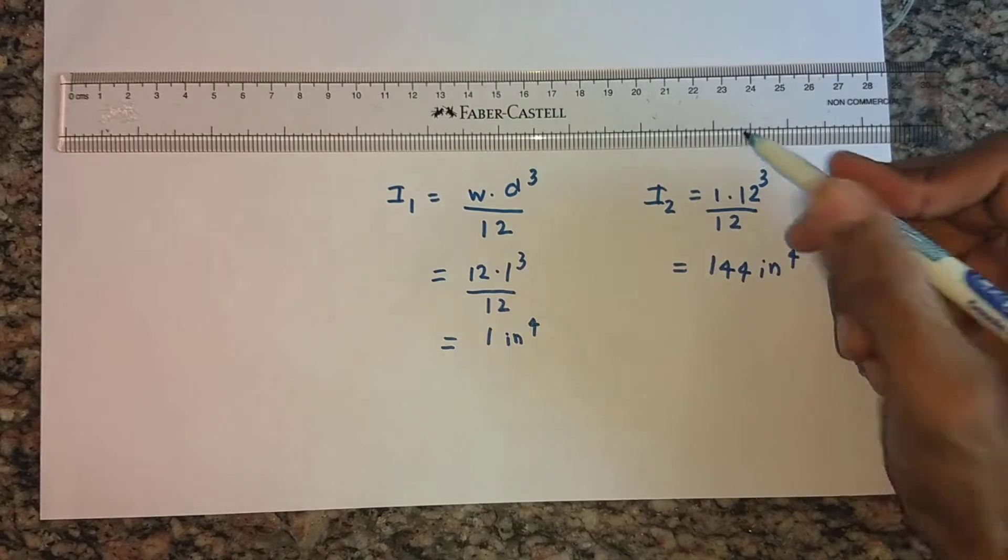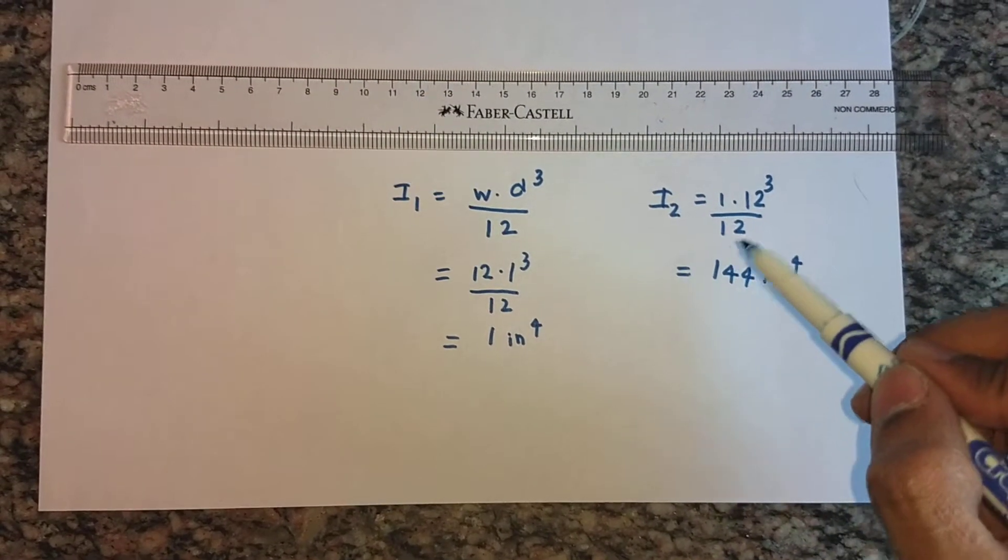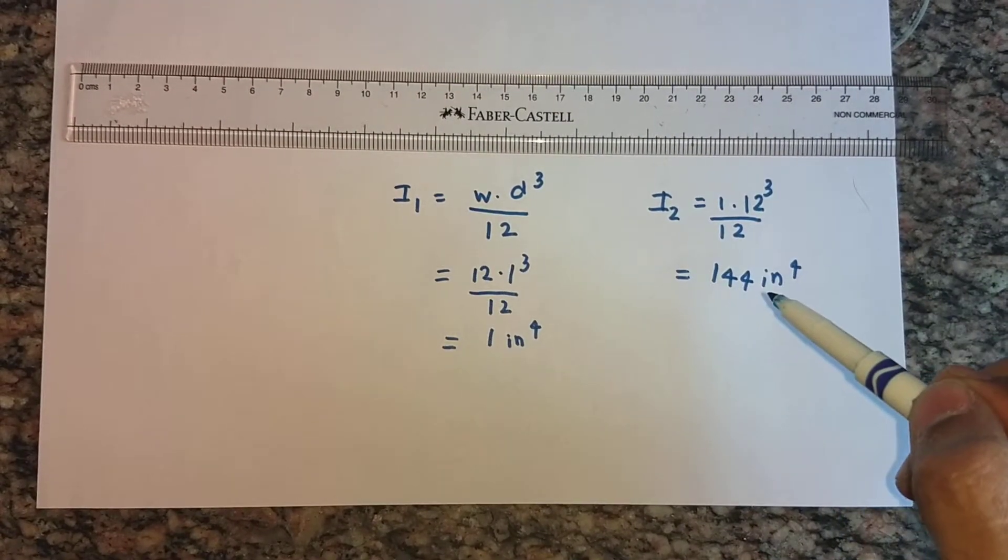So now you see the difference. It's really difficult to rotate the ruler in that direction because the moment of inertia is pretty large.